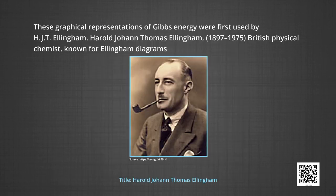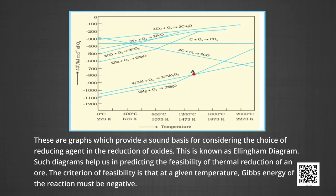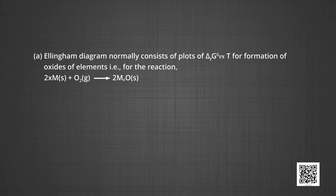These graphical representations of Gibbs energy were first used by H. J. T. Ellingham. Ellingham diagrams are graphs which provide a sound basis for considering the choice of reducing agent in the reduction of oxides. Such diagrams help us in predicting the feasibility of thermal reduction of an ore. The criterion of feasibility is that at a given temperature, the Gibbs energy of the reaction must be negative.